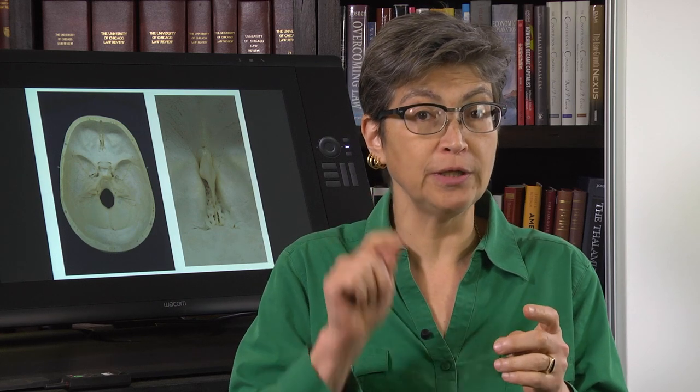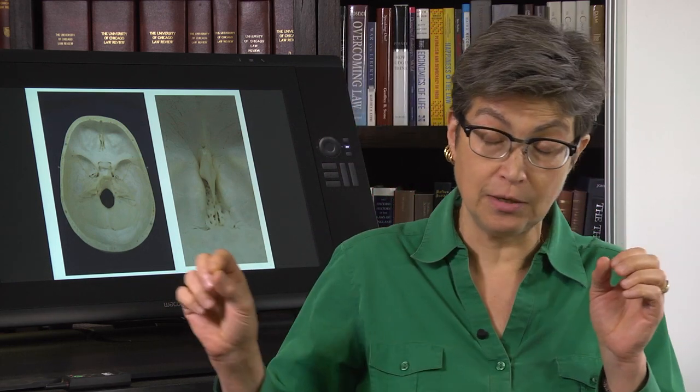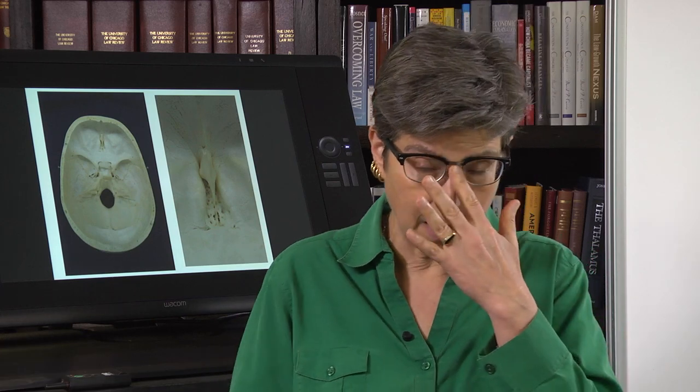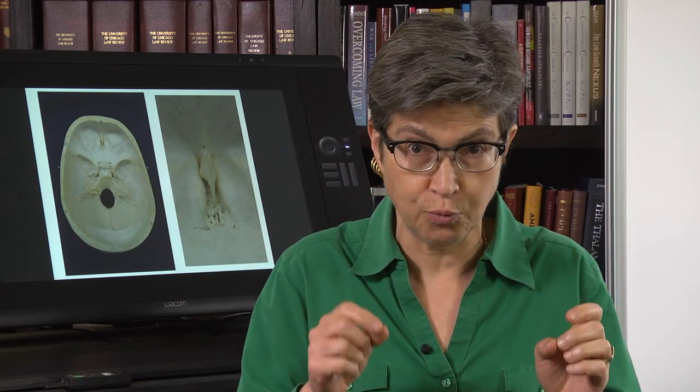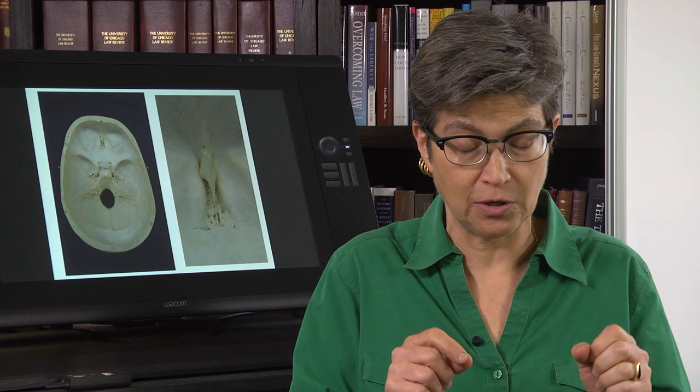First we have to understand what cranial nerves are. Cranial nerves are nerves that take information out of a hole in the cranium. Spinal nerves, as you recall, are nerves that exit the vertebral column. There is one nerve that illustrates the importance of the way I phrase that, and that is the spinal accessory nerve, cranial nerve 11.